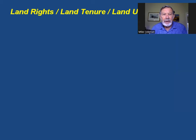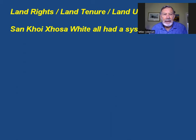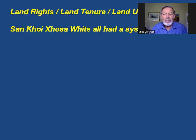We hear about land rights, land tenure, land use — they're all very much connected, but also slightly different. All the communities that have lived in the Eastern Cape over a hundred thousand years or more had a system of some kind of recognised tenure, which means the holding of land in one form or another. The holding reflects the land use and vice versa, and individual communities and individual people have particular land rights in those areas.